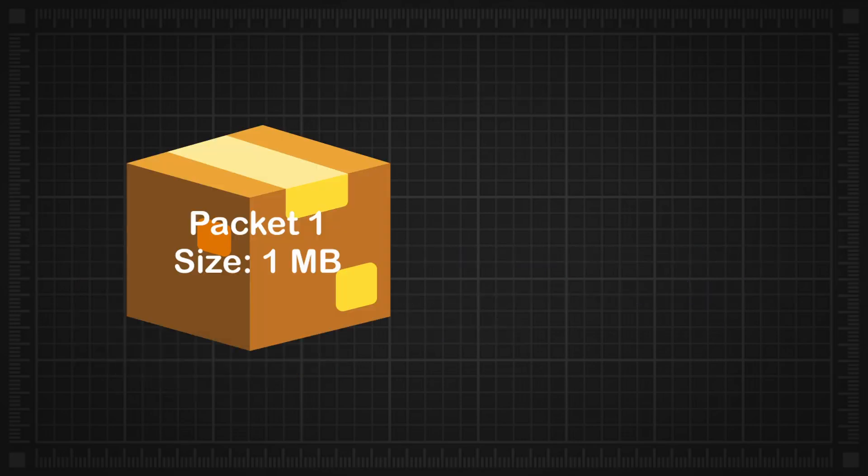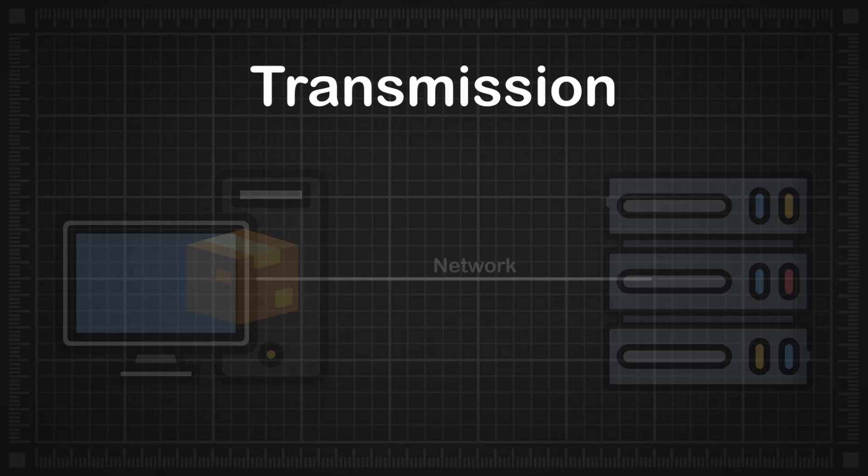The size information helps the receiving end, the server, determine how much data to expect. Transmission: The client sends the encoded packet to the server over the network.